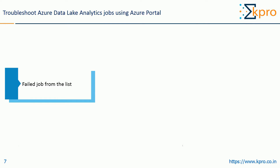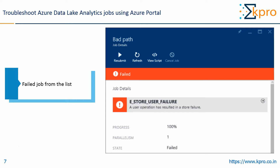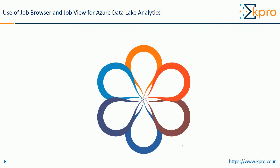Click on a failed job from the list to open the job details. Notice there is a Resubmit button for failed jobs — after fixing the problem, you can resubmit the job by clicking the Resubmit option. By default, the Data Lake Analytics service archives jobs for 30 days. The expiration period can be configured from the Azure Portal by setting a customized expiration policy. You will not be able to access job information after expiration.